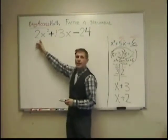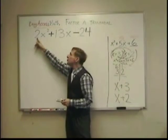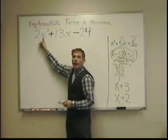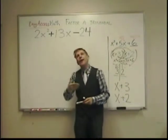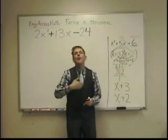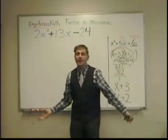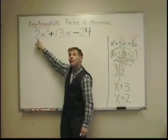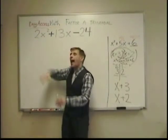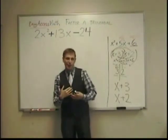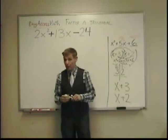you can see what's tricky about it is there's a two before the x squared. You may be faced with problems with twos, with threes, with fives, sevens. There'll be a number before the x squared. And that changes up things a little bit in how you approach the problem.